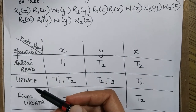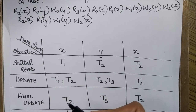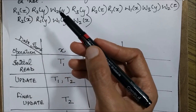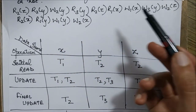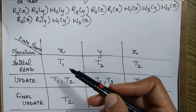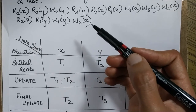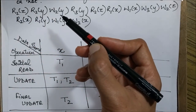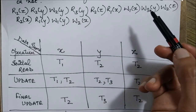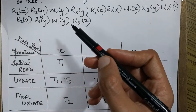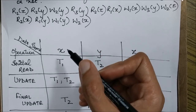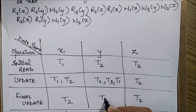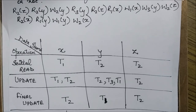Then we check for updates. We check what write operations are performed by various transactions on each data item. For x, we get W1x and W2x, so T1 and T2 both write x, and T2 writes it finally — so T2 is the final update for x. For y, we have T2, T3, T1, and T2 again — and T1 performs the final update on y.